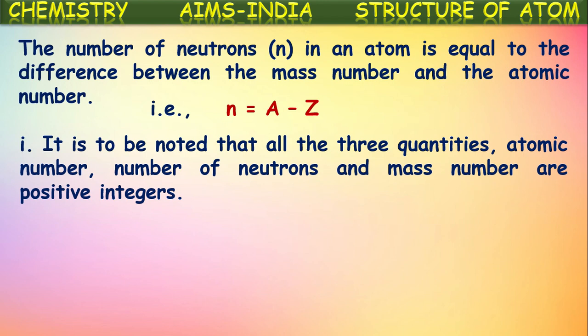It is to be noted that all three quantities — atomic number, number of neutrons, and mass number — are positive integers, because there will be no negative protons, neutrons, or electrons. There won't be a negative number. That's why these three quantities — atomic number, mass number, and number of neutrons — will always be positive integers.